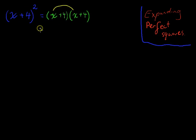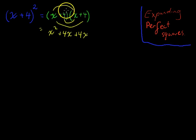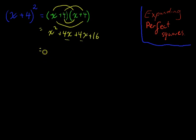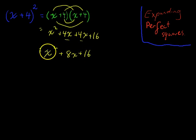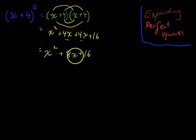It's First, Outer, Inner, Last — FOIL. And you can see two like terms there. x squared plus 4x plus 4x is 8x, plus 16. So x plus 4 squared is equal to x squared plus 8x plus 16 when you expand it.